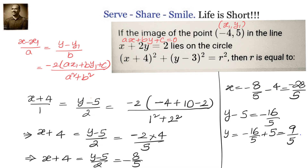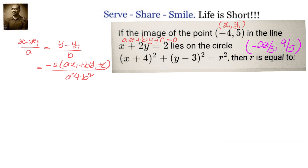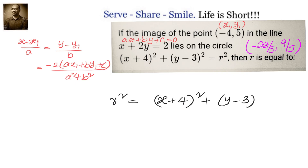Now this point lies on the given circle x plus 4 whole square plus y minus 3 whole square equals to r square. Substitute in place of x and y the image coordinates minus 28 by 5 comma 9 by 5 and we will get r square. Take the square root to get the r value.